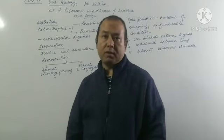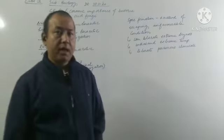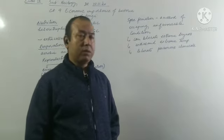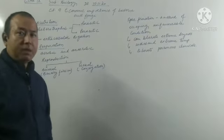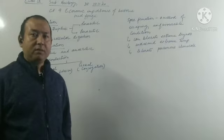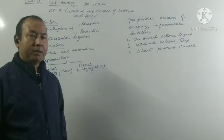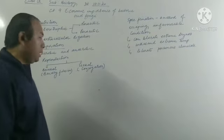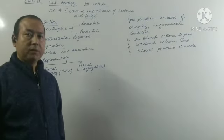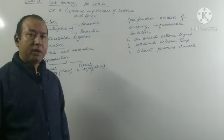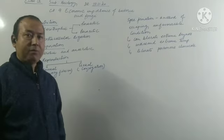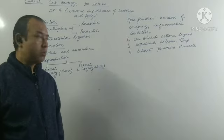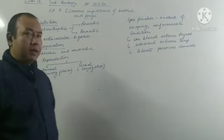Two types of reproduction are seen in bacteria: asexual as well as sexual. If you talk about asexual, they mostly show binary fission. They multiply by breaking down into two. The parent cell breaks up into two. Even the nuclear content also gets distributed and gets equally distributed to both the cells, and thereby two individuals are produced. This type of asexual reproduction is called binary fission, where the parent cell divides to produce two daughter cells.